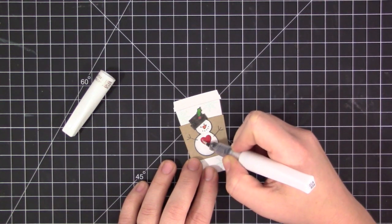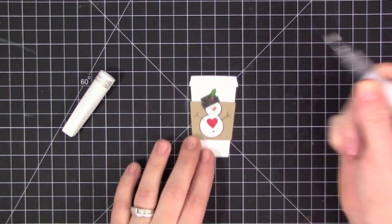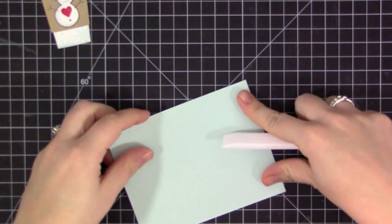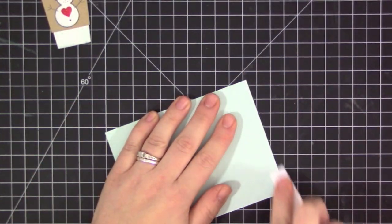So now I'm adding some glitter to the snowman's hat and the holly, as well as the heart on the center area of the snowman. And then I'm going to go ahead and assemble my actual card base here.